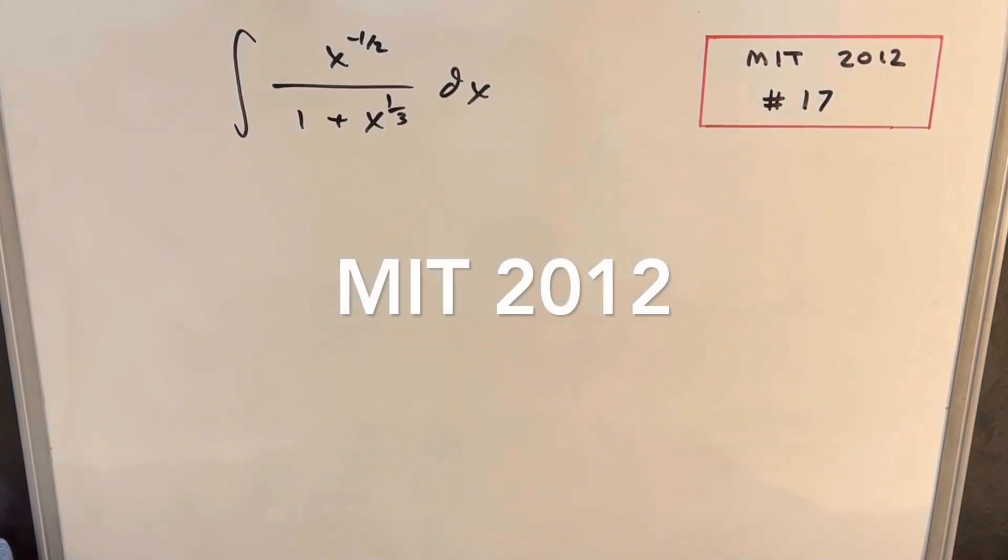Okay, we have here another integral from MIT 2012, problem 17. We have the integral of x to the minus 1 half over 1 plus x to the 1 third dx. For some reason I really like these problems with fraction exponents that we have a few different ways to try to approach it.